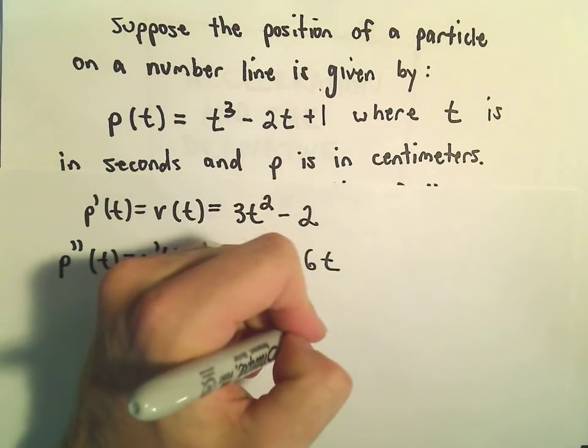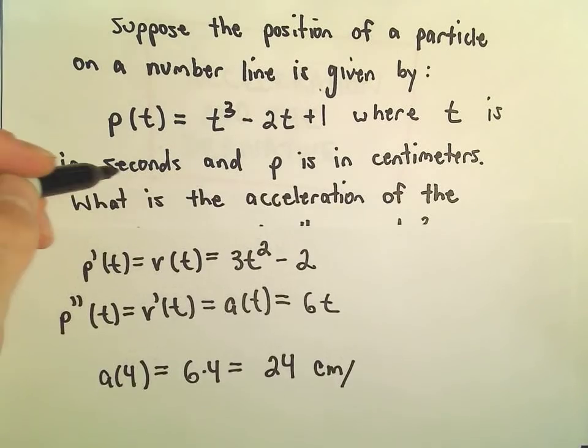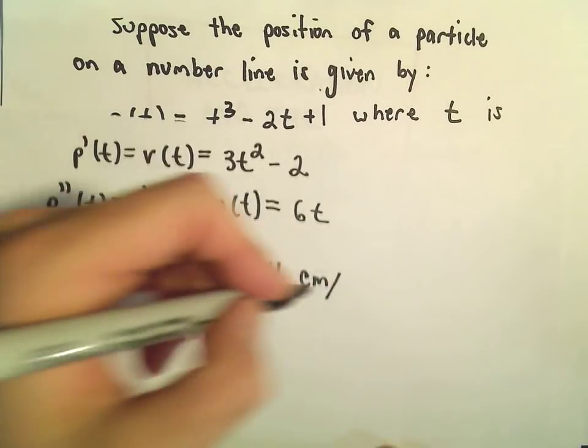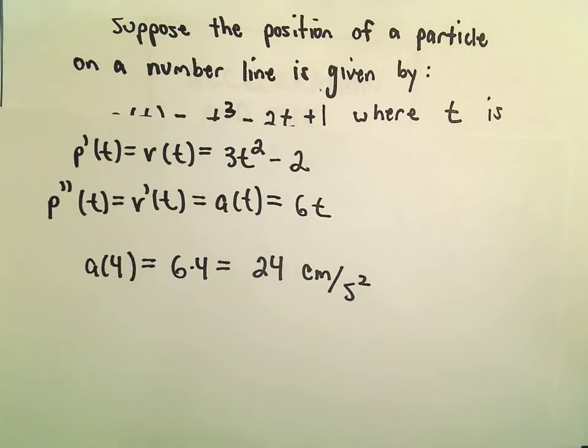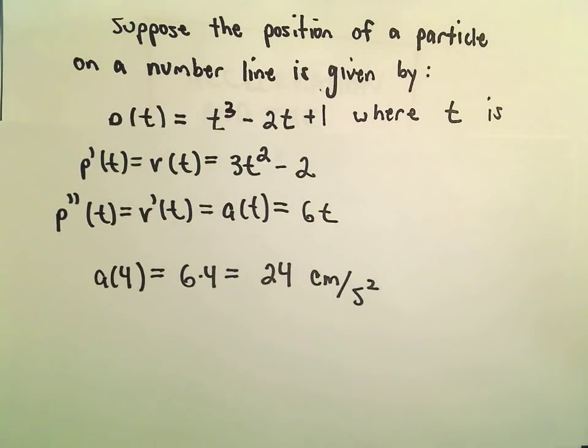And the units here, we'll use centimeters per seconds squared. And those are the units that go with acceleration. So again, the whole idea in this one, if you start with position, you just have to take two derivatives to get down to your acceleration function.